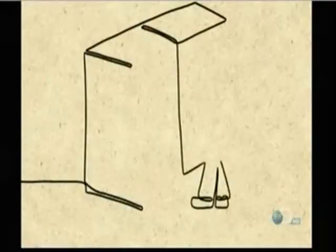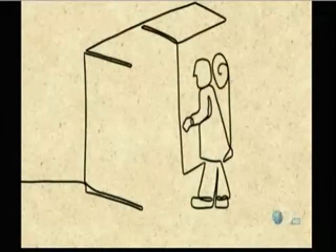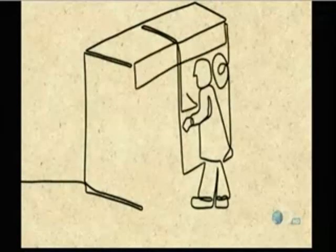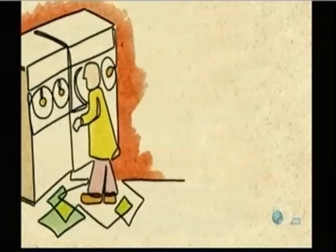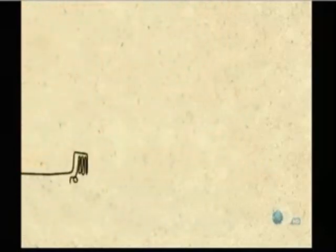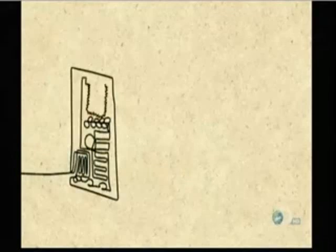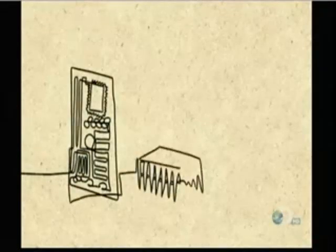Scientists built the first computer in 1937, but it could only do algebra. The first general-purpose computer in 1946 was the size of 20 refrigerators. During the 1950s, transistors replaced bulky vacuum tubes.